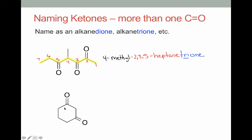Okay, in the example below, we have a cyclohexane ring. We have carbonyls at 1 and 3. So we would name this 1,3-cyclohexanedione, since there's 2.